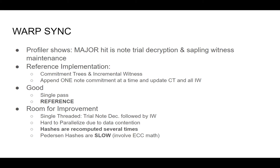The third issue, which is probably the biggest one, is that because the incremental witness and commitment trees are two separate data structures, the information they encapsulate — mostly hashes — is recomputed between them. The root hash will be calculated for the commitment tree and also for each incremental witness.